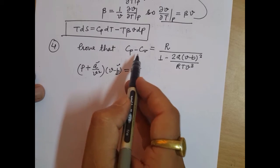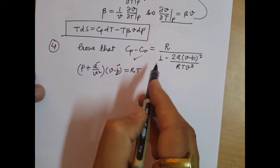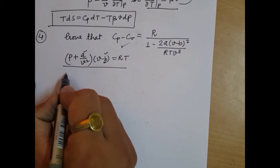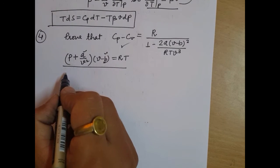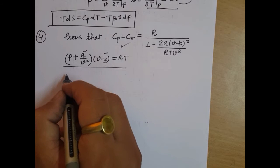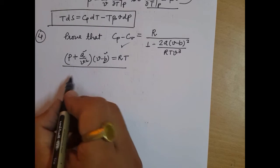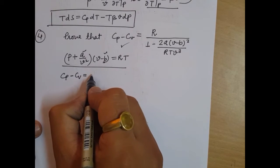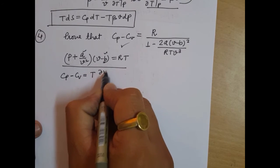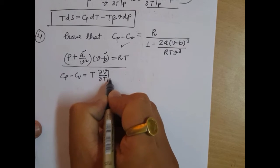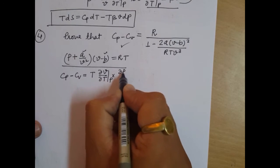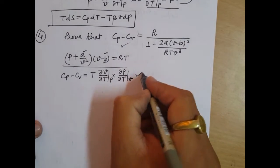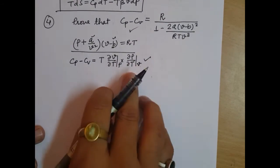So, this has to be proved for this Van der Waals gas. How to start? We know a relation — one of the Cp minus Cv relations. That relation says: Cp minus Cv is equal to T times (∂V/∂T) at constant pressure, into (∂P/∂T) at constant volume. We have proved this in one of our earlier lectures.